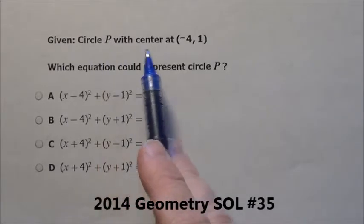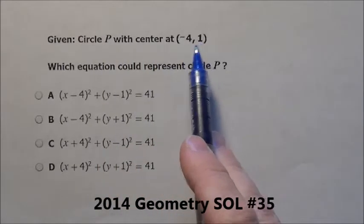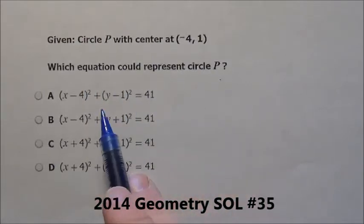Here's problem 35. It says, given circle P with center at negative 4, 1, which equation could represent circle P?